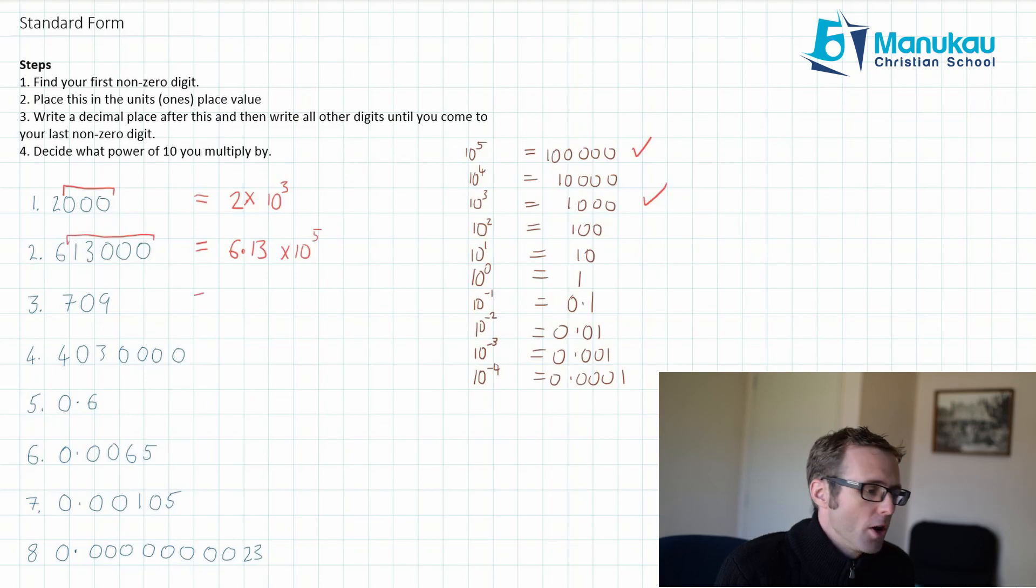Let's do the next one. 7.09 times 10 to the power of, this is 100, so we're looking at 10 to the power of 2. We can do a quick check. Do I have two digits after the 7? Yes, perfect.